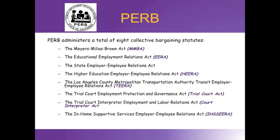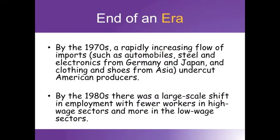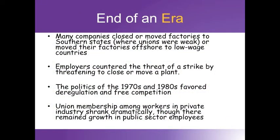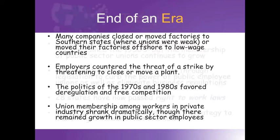By the 1970s, a rapidly increasing flow of imports such as automobiles, steel, and electronics from Germany and Japan, and clothing and shoes from Asia, undercut American producers. By the 1980s, there was a large-scale shift in employment, with fewer workers in high-wage sectors and more in low-wage sectors. Many employers countered the threat of strike by threatening to close or move a plant. The politics of the 1970s and 1980s favored deregulation and free competition, and union membership among workers in private industry shrank dramatically. Though there remained growth in public sector employee union membership, this trend continues today.